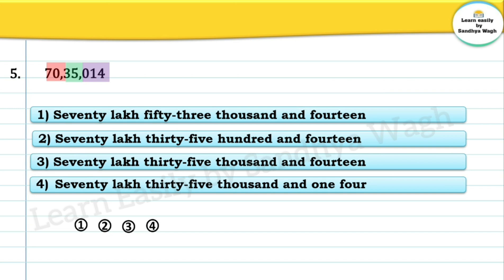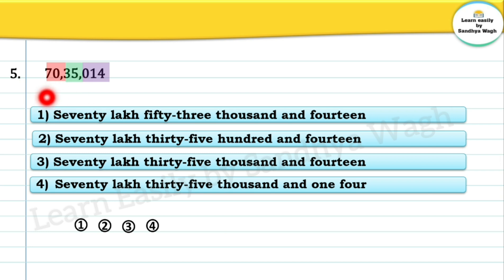The next number is 7035014. In the units period we have 014, in the thousands period we have 35, and in the lakhs period we have 70. So the number is seventy lakhs thirty five thousand and fourteen. Option number three is the correct option: seventy lakhs thirty five thousand and fourteen.